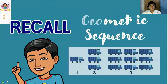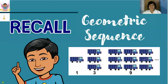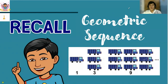A geometric sequence is a sequence in which each term after the first is obtained by multiplying the preceding term by a constant r, known as the common ratio. For example, the sequence 1, 3, 9, 27, and so on has a common ratio of 3, since 3 divided by 1 equals 3, 9 divided by 3 equals 3, and 27 divided by 9 equals 3. So we classify that sequence as a geometric sequence.